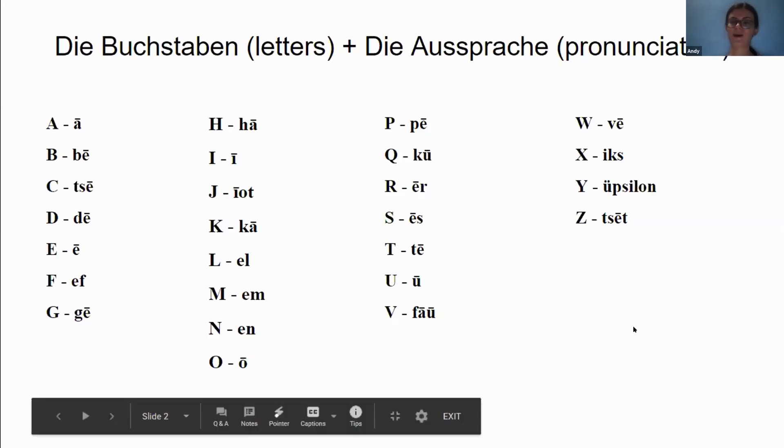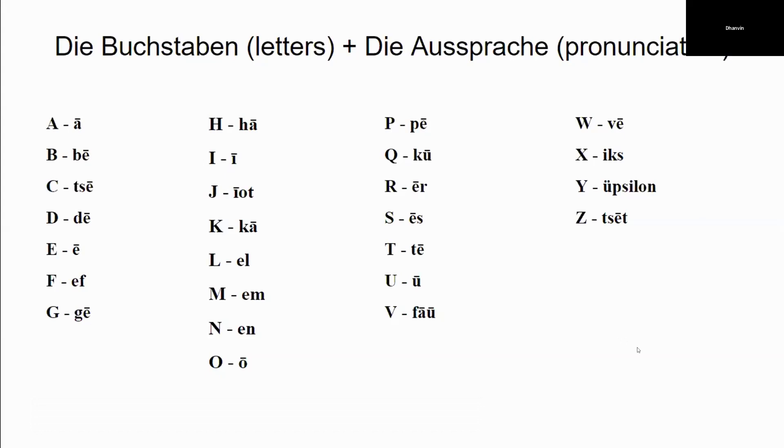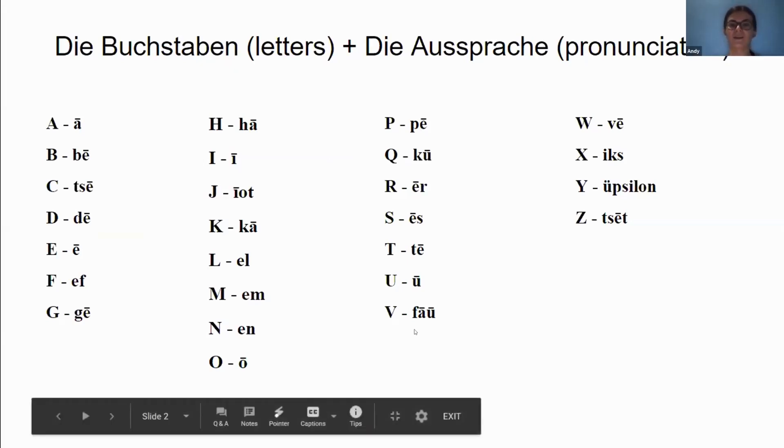And who wants to do the last row? Ma'am. Who is that? Ma'am, Sostin. Okay. You can tell us. Ma'am, W is V, X is X, Y is Y, and Z is Z. Thank you so much. Thank you, ma'am.